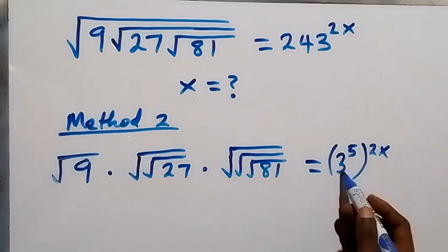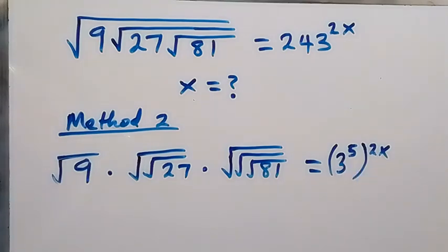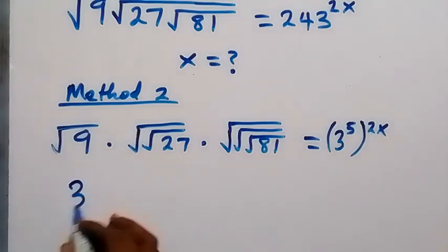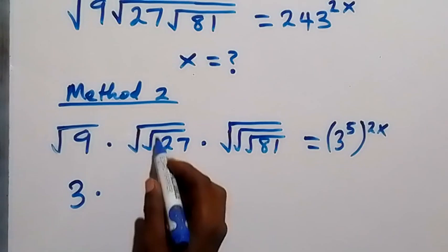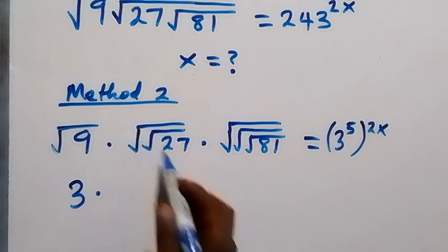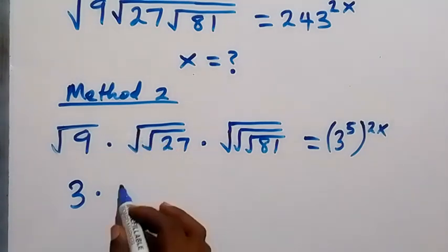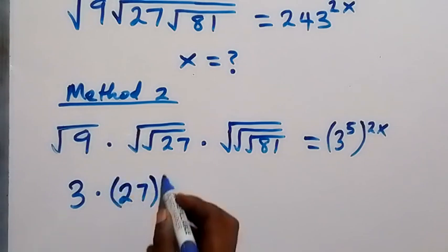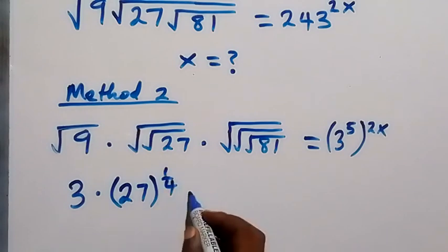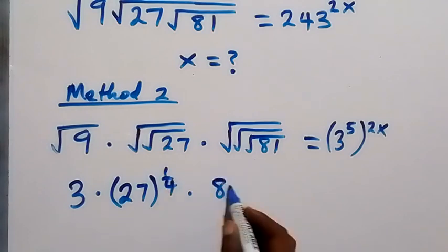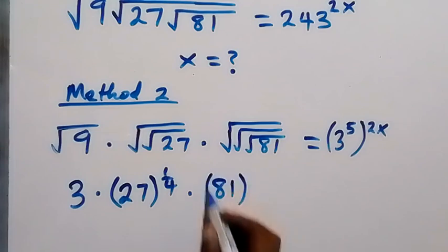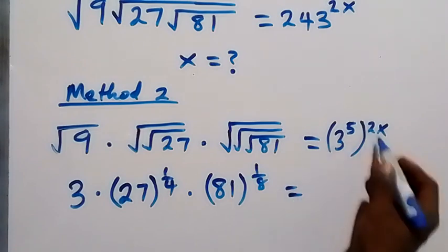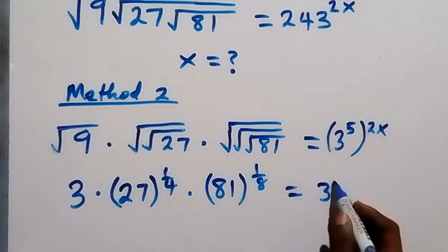Since 3 multiplied 5 times gives us 243, in the next step we have the square root of 9 as 3. Since square root means raise to power one-half, two square roots mean raise to power 1 over 4, so we have 27 raised to power 1 over 4. Then three square roots give 81 raised to power 1 over 8, which equals 3 raised to power 10x.